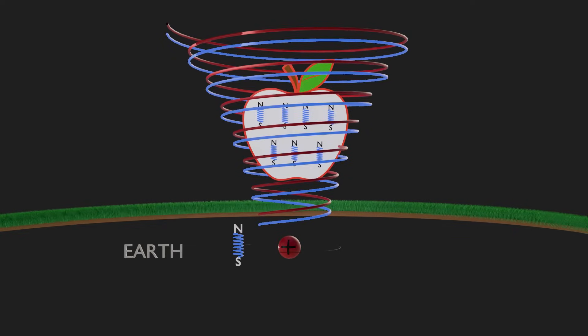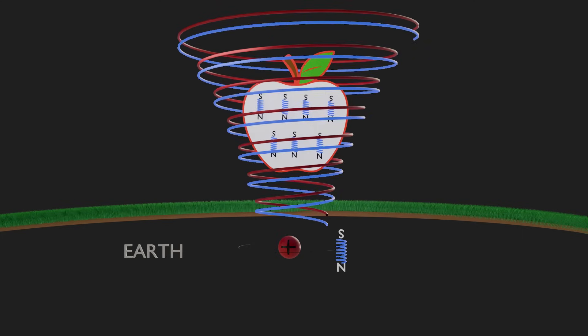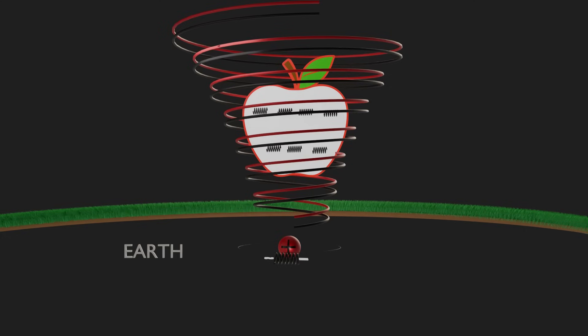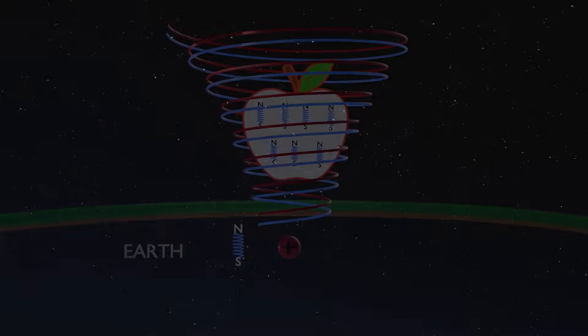The magnetic forces switch on and off 1.42 billion times every second at the hydrogen frequency. The force of gravity is alternating magnetism, caused by the synchronised spin of electron magnets in neighbouring atoms.